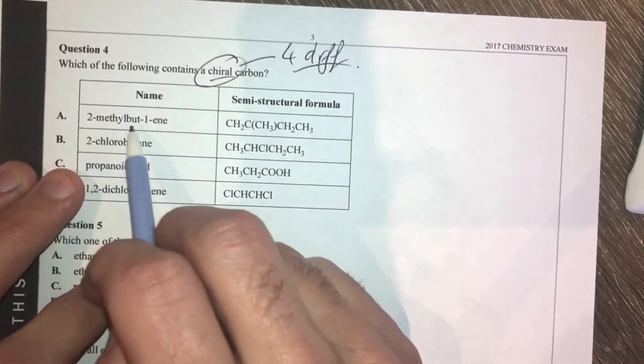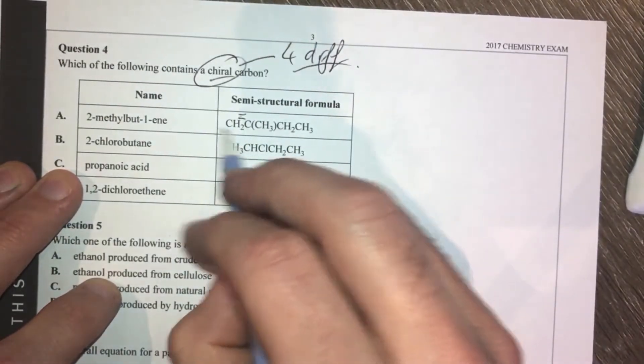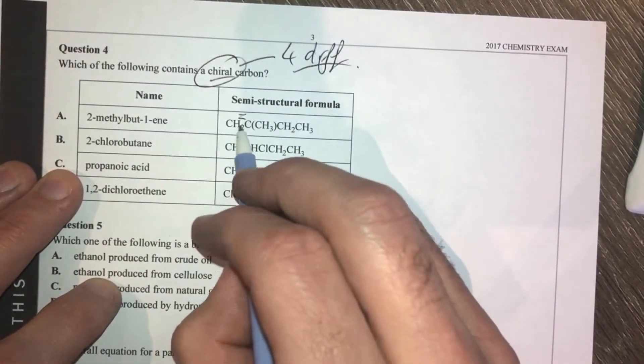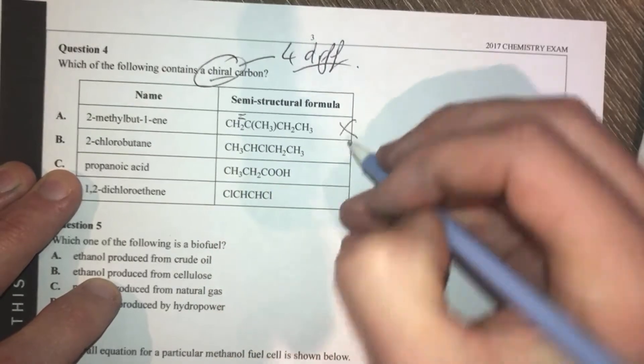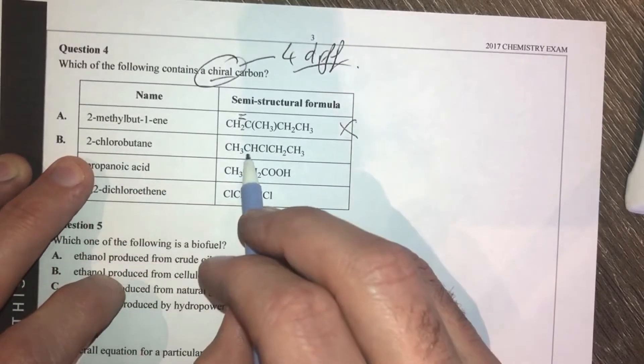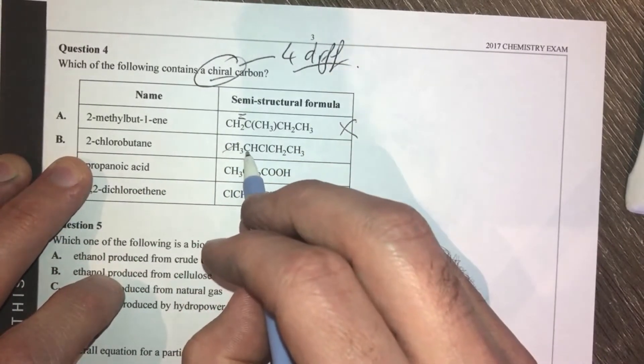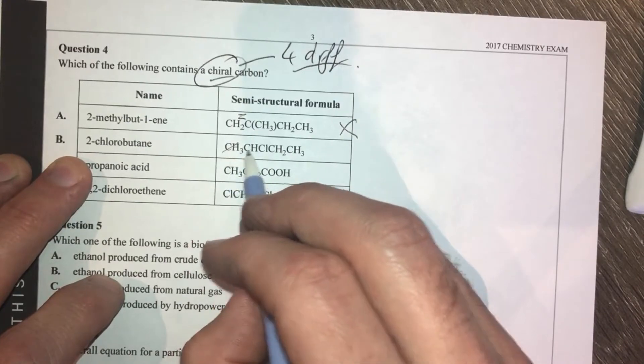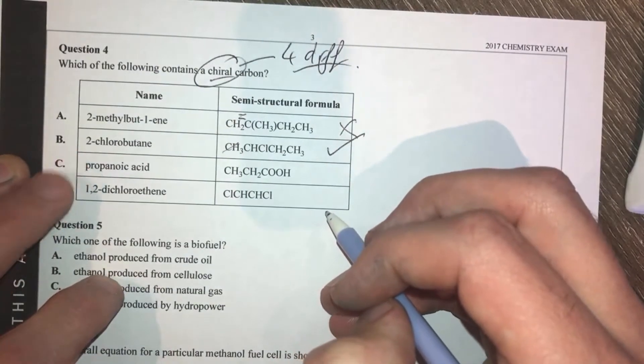Alrighty, this first one, methyl bute-1-ene. That means we've got a double bond here between our first and second carbons, which is not being shown. That makes that not chiral. Not chiral because it's got three. That's not going to have any chiral else there. This 2-chlorobutane, this second carbon here, looks pretty good. It's not this carbon. This one's got a methyl group, a chlorine, a hydrogen, and this. This looks pretty good for me, which is really good.